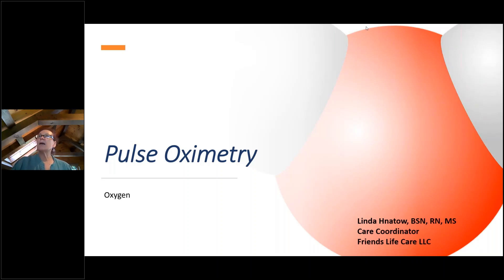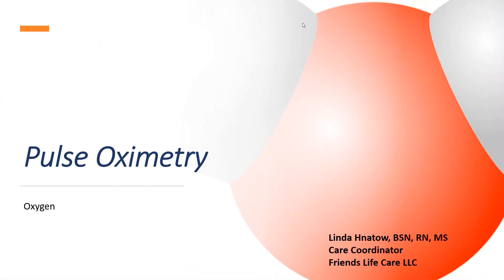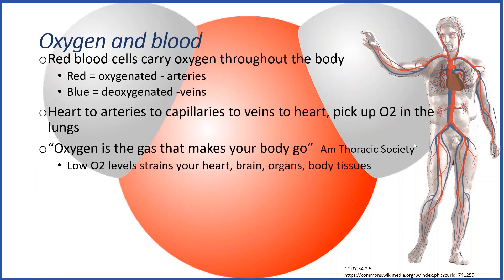I'm going to turn off my camera while we look at some slides. I want to start out first by talking a little bit about oxygen and blood and how red blood cells in our bodies carry oxygen throughout the body. Through the arteries, which you see here in red, they carry oxygenated blood. The oxygen is being carried on red blood cells and taken to all different parts of our body. I really like the American Thoracic Society quote: oxygen is the gas that makes your body go.